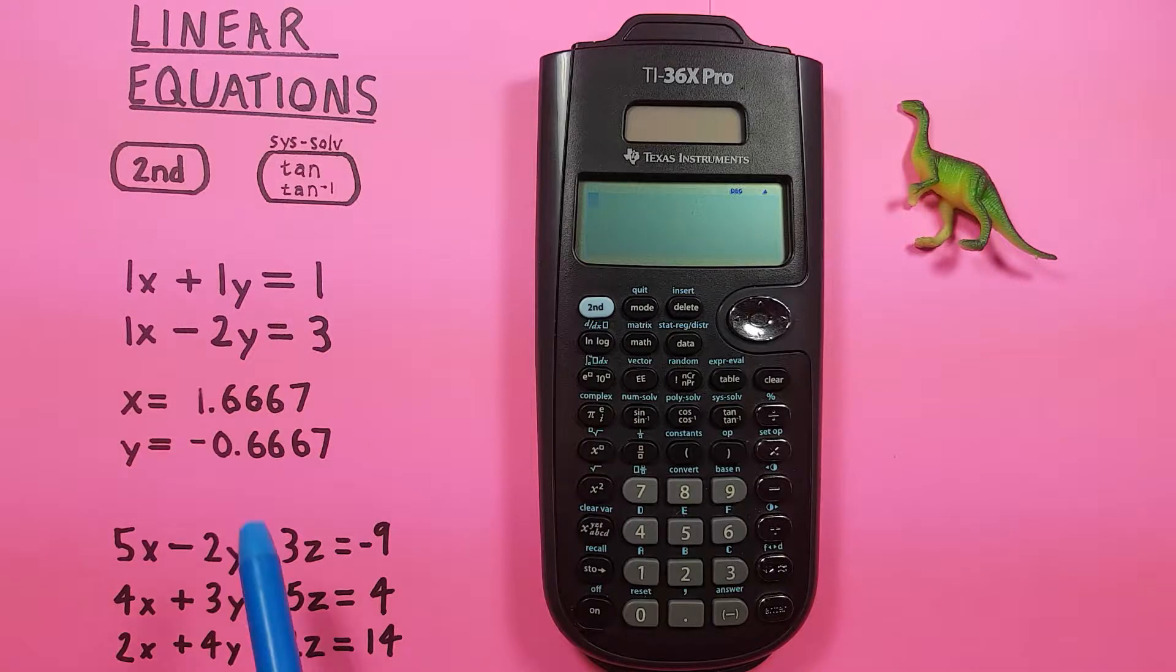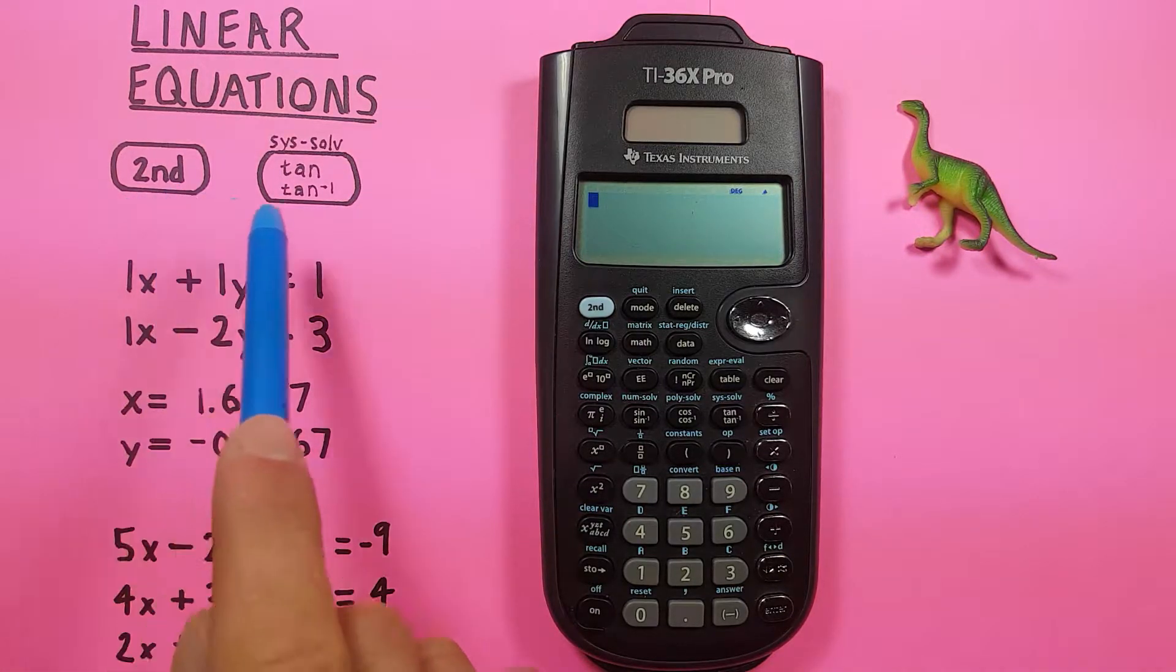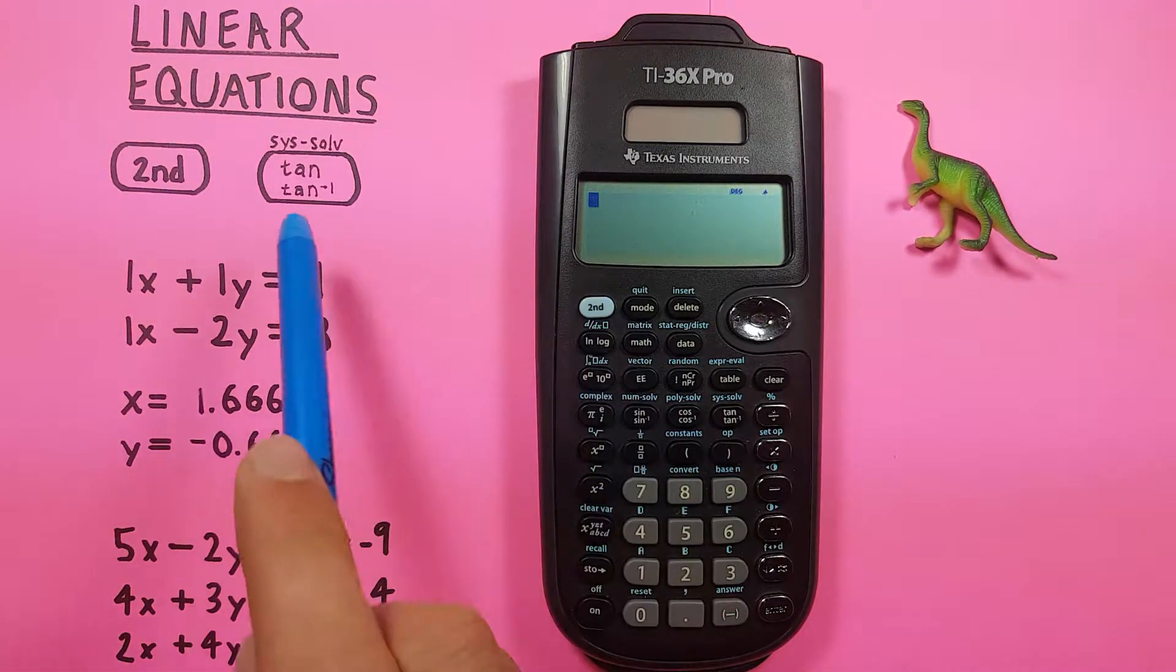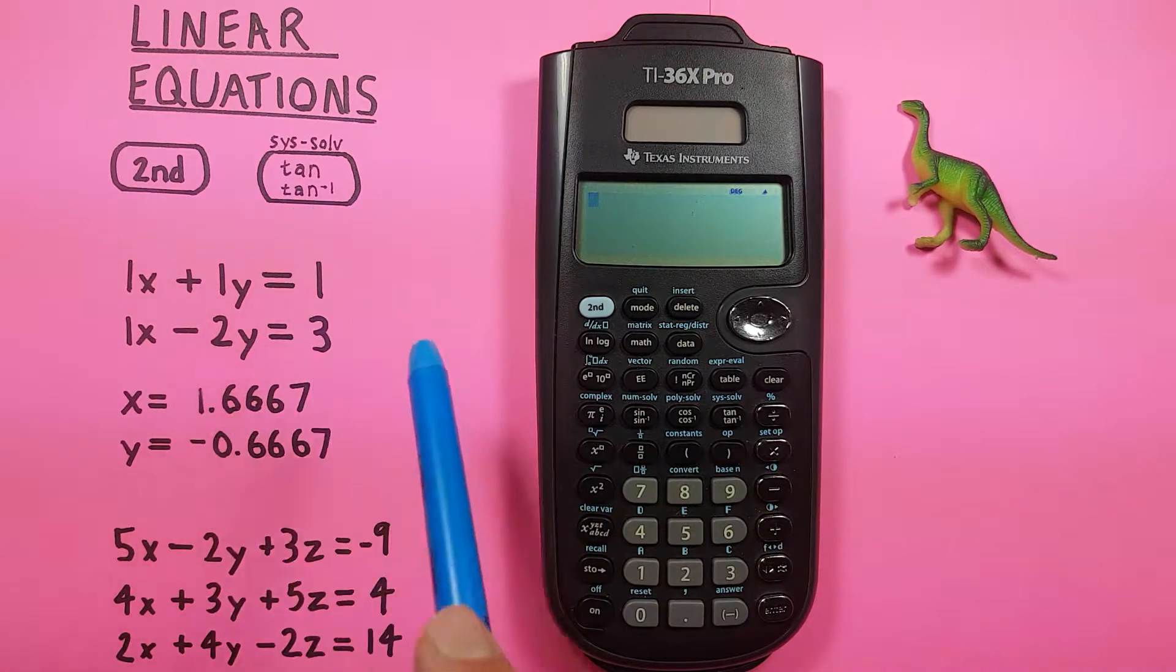To do this we'll be using the second function key, looks like this, located here, as well as the tan key that looks like this, located down here.